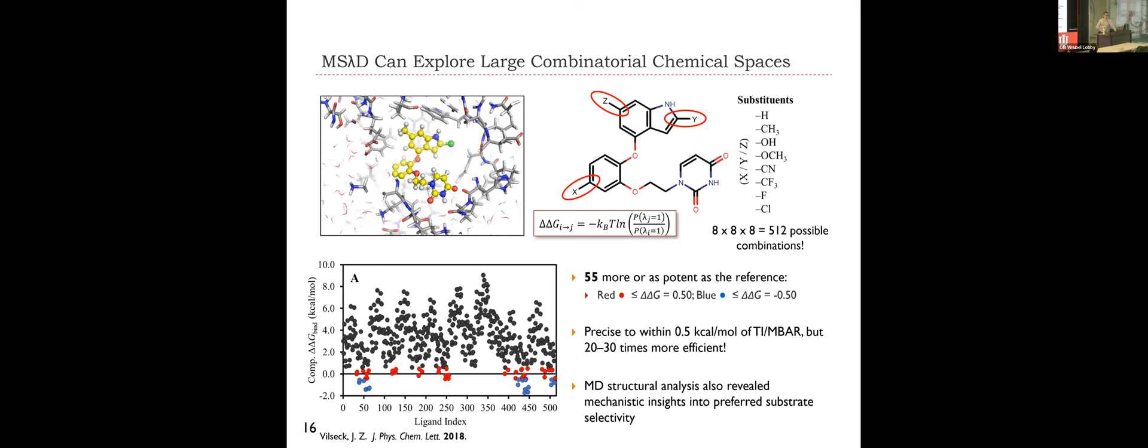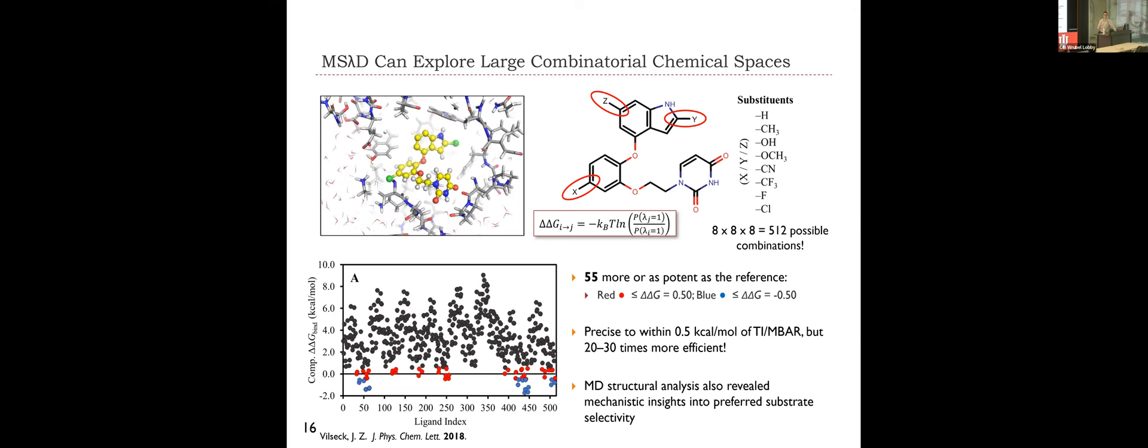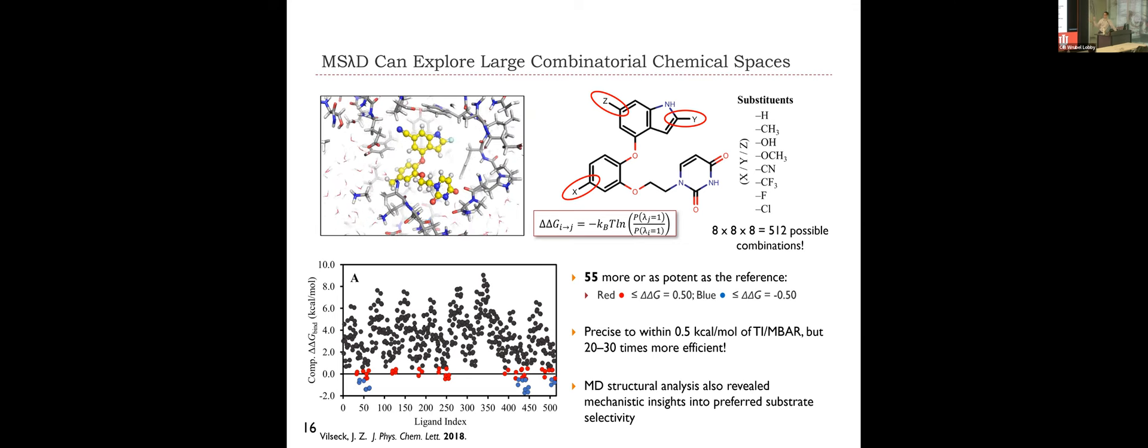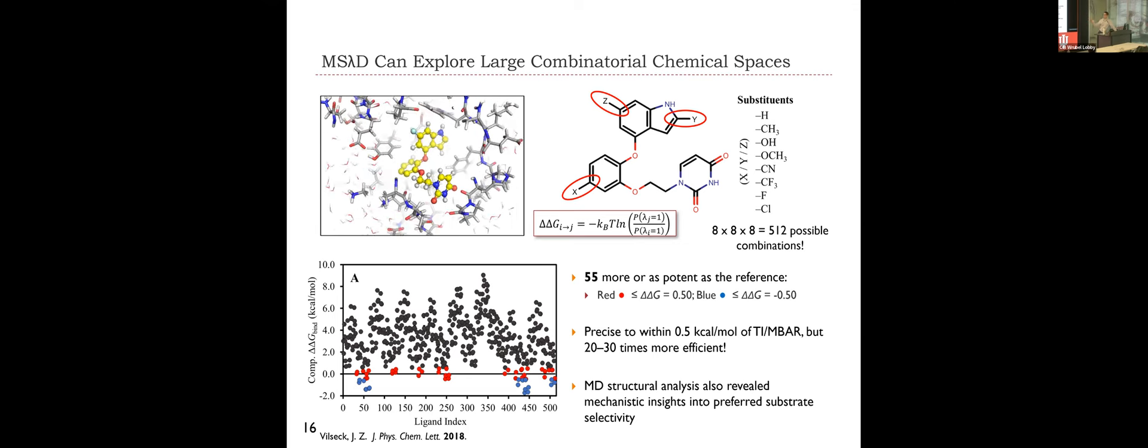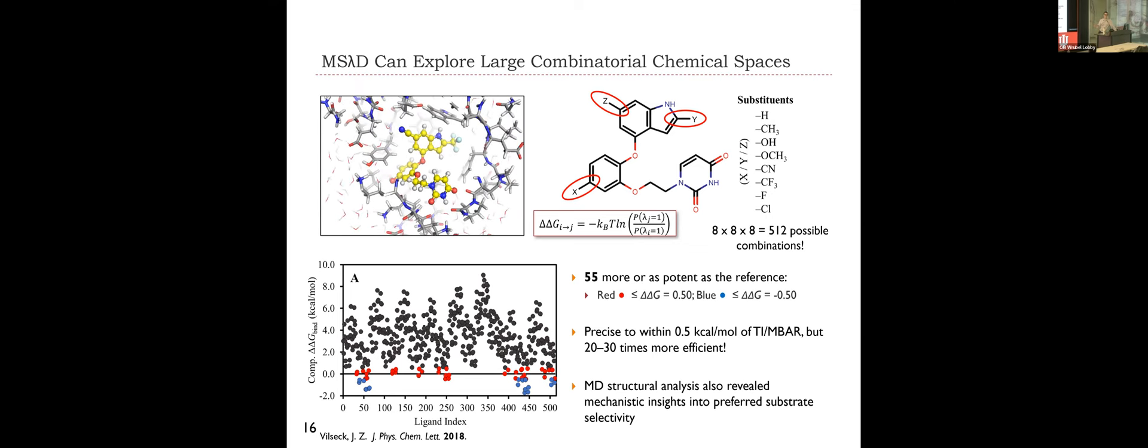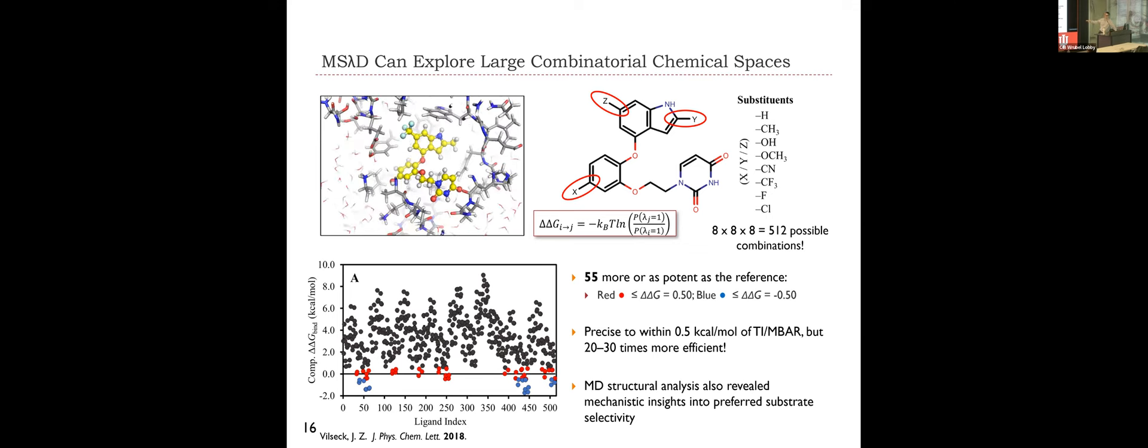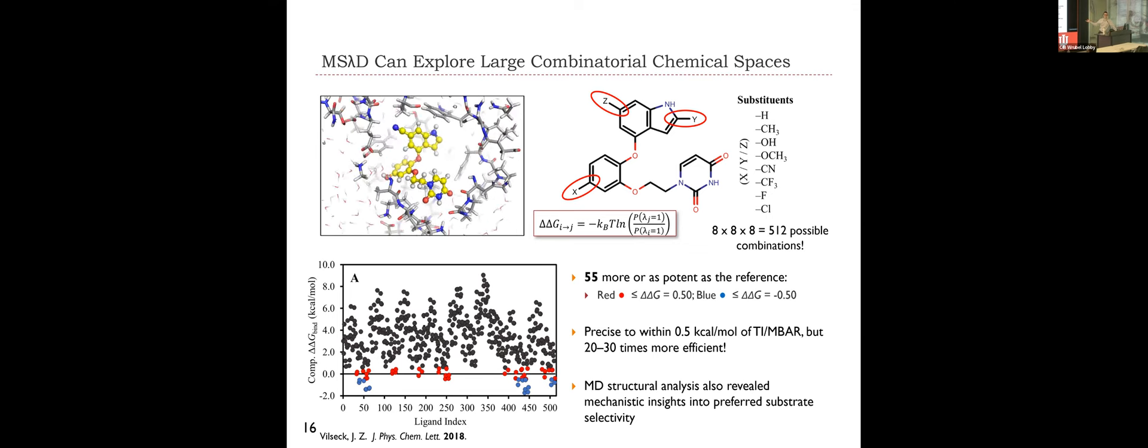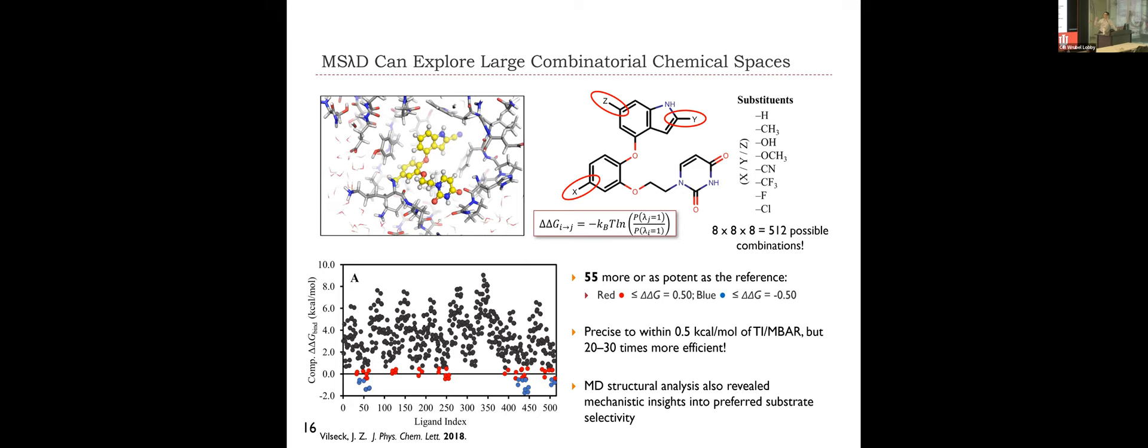In this particular study, you can see we have 512 ligands resulting from the 8x8x8 combinations. And the majority of the free energies are colored black, suggesting that they are changes that are less favorable than what we're starting with. But we were able to identify 55 compounds that were either calculated to be as potent or bind as selectively as our starting compound. And then in blue, we have compounds that were predicted to bind better. We did compare this to thermodynamic integration. We were able to show really no loss in precision or accuracy of our computed free energy values. We were also able to show that lambda dynamics was 20 to 30 times more efficient.